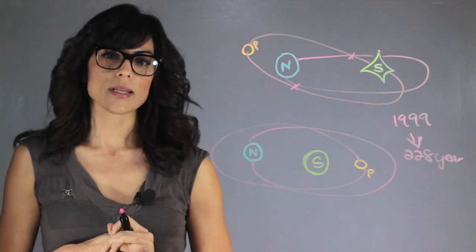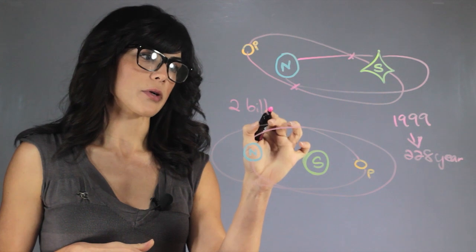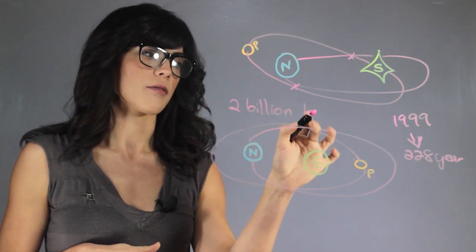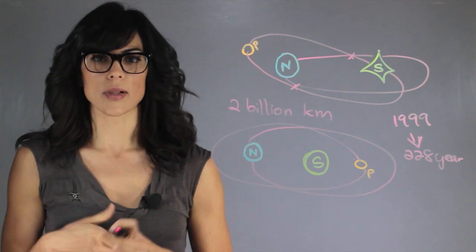The closest actual distance they will get from each other is two billion kilometers, which is fairly far, so we don't have to worry about Pluto and Neptune ever colliding.